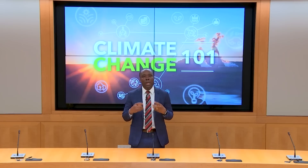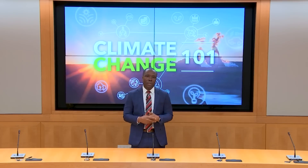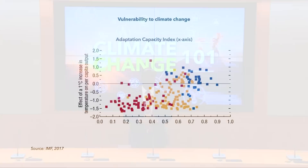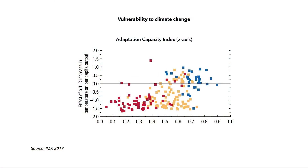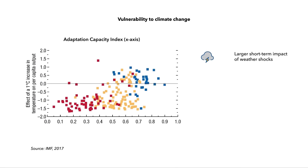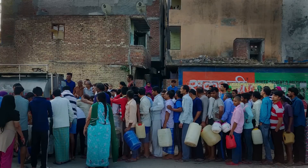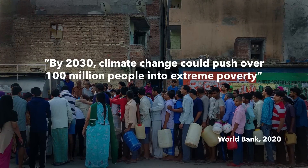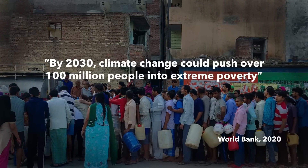For developing countries with limited resources, the effects of climate change — including mass migration and conflicts — can be compounded. For example, due to limited future adaptation capacities, developing countries are likely to experience long-lasting impacts of short-term weather anomalies, slower economic recovery following natural disasters, and greater vulnerability to future shocks. Across countries, poor households have limited ability to adapt to the effects of climate change. Climate change could push over 100 million people into extreme poverty by 2030, according to the World Bank.